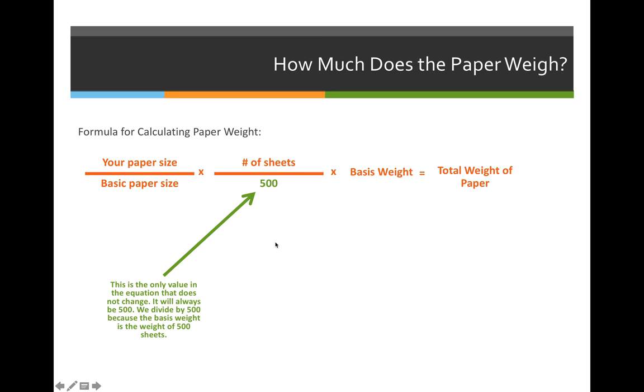The second column would be the number of sheets that we are purchasing divided by 500. Make sure that you're using the number of sheets in the middle column, not the number of items.